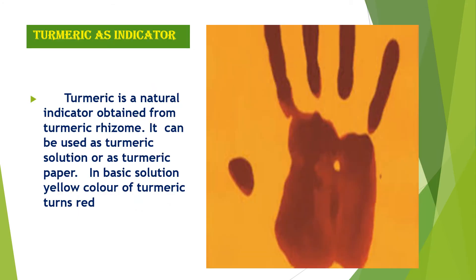Let us now look into turmeric as an indicator. Turmeric is a natural indicator obtained from the rhizomes of the turmeric plant. The solution of turmeric can be used, or it can be embedded into paper and used as an indicator.